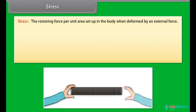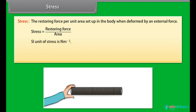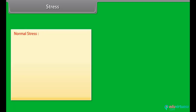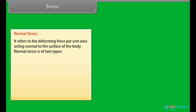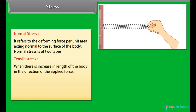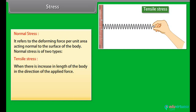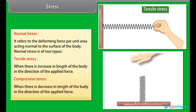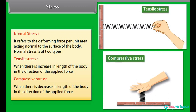Stress is defined as the restoring force per unit area set up in the body when deformed by an external force. Stress equals restoring force divided by area. The SI unit of stress is Newton per meter squared. Stress is of two types: normal stress and tangential stress. Normal stress refers to the deforming force per unit area acting normal to the surface. It is of two types: tensile stress, when there is an increase in length in the direction of the applied force, and compressive stress, when there is a decrease in length in the direction of the applied force.